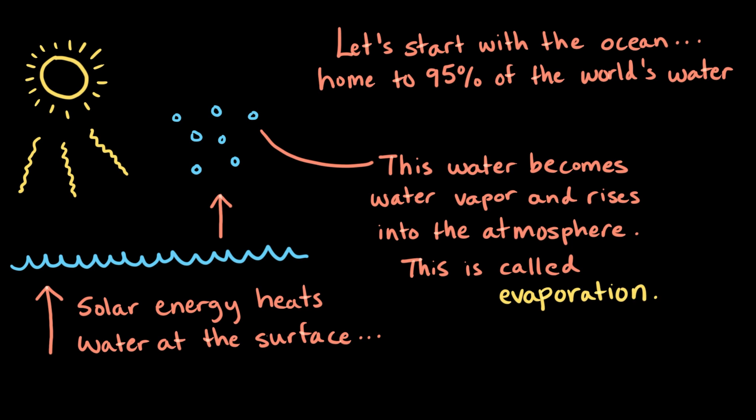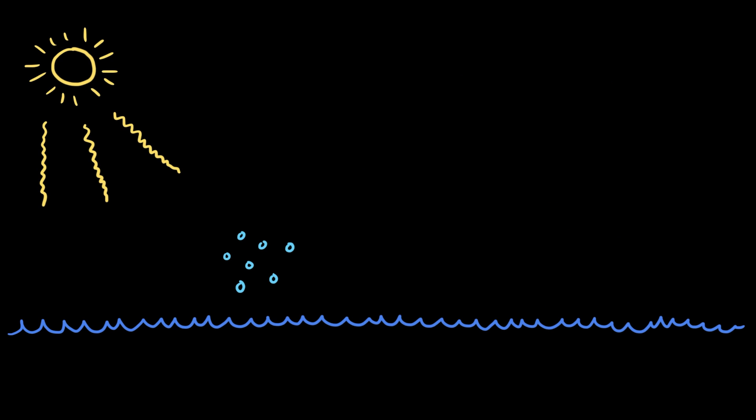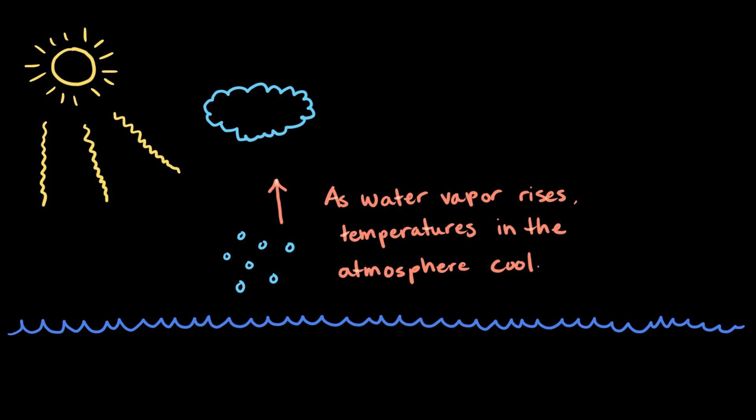Water vapor is less dense, meaning it's lighter than liquid water, so it rises up and up into the atmosphere. However, as the water vapor rises, the temperature in the atmosphere cools. In turn, the water vapor condenses into tiny liquid water droplets, or, as we see them, clouds. This is called condensation.